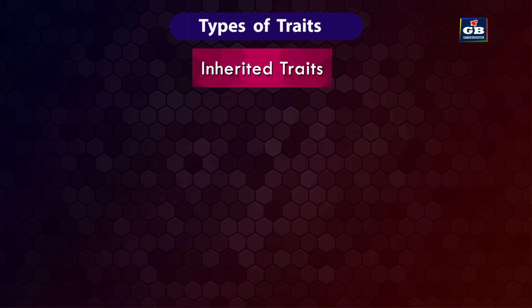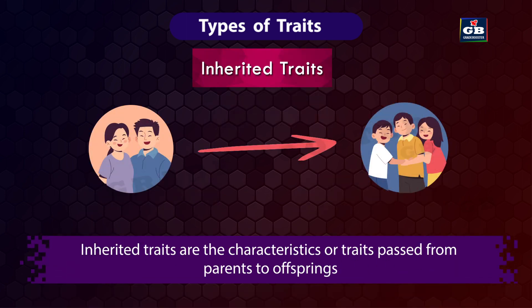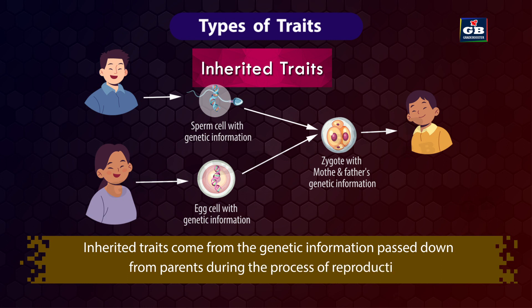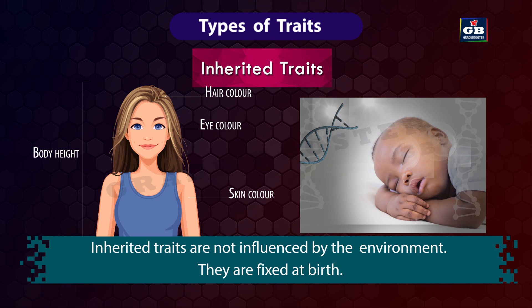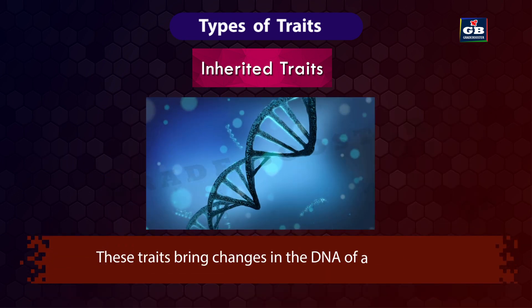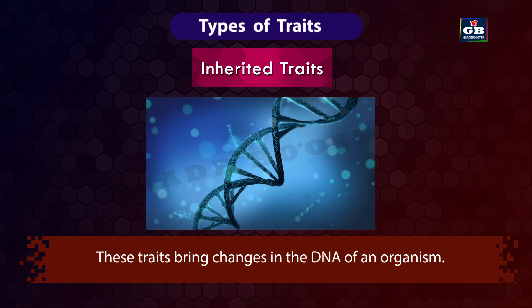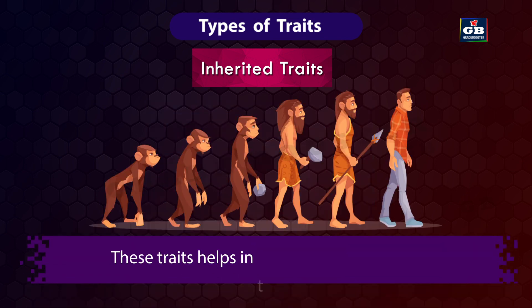Inherited traits are the characteristics or traits passed from parents to offspring. They come from the genetic information passed down from parents during the process of reproduction. Inherited traits are not influenced by the environment — they are fixed at birth. These traits bring changes in the DNA of an organism and help in the process of evolution.